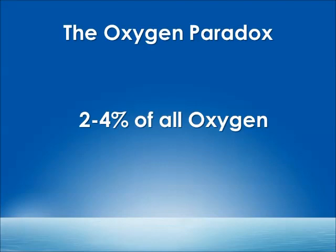Mitochondria are the source of energy, and oxygen is used to drive that process. But there is the oxygen paradox. We need to breathe oxygen in order to live, in order to break down glucose into energy. But 2–4% of all oxygen turns into free radicals. So not only do we need oxygen — oxygen is actually slowly killing us. We can't really change the fact that we are an oxygen-based system, but we can try to counteract the free radicals formed by taking antioxidants.